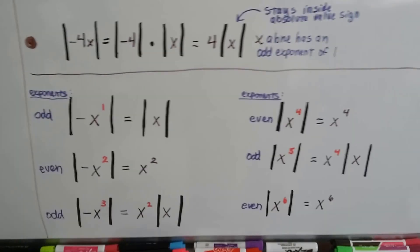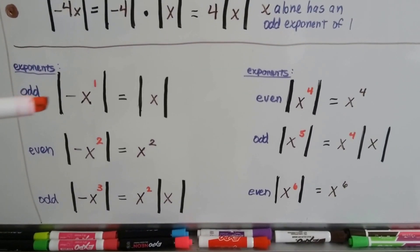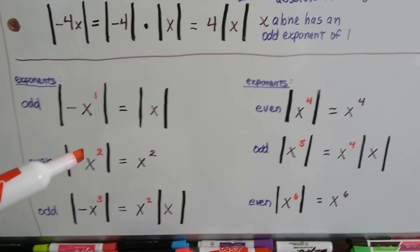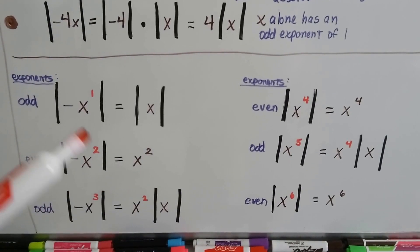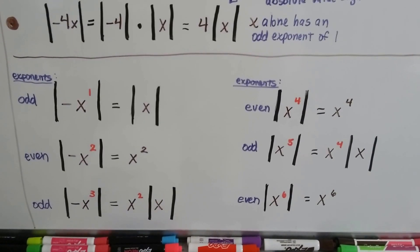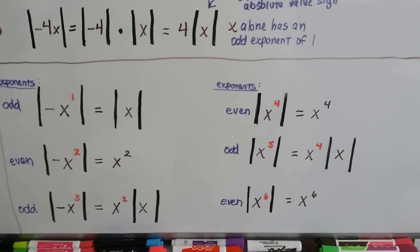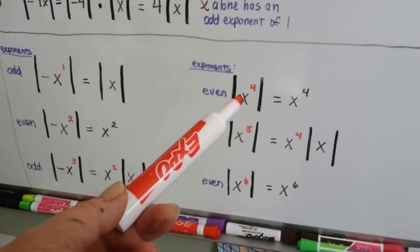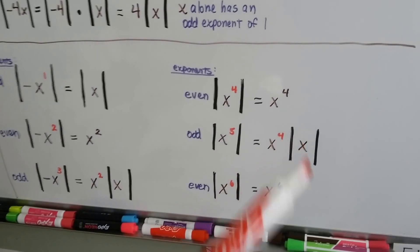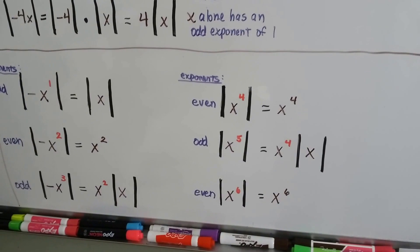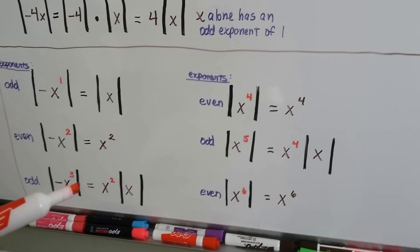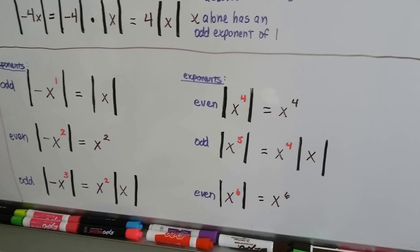Here's a chart that might help make sense of all of this. If the exponent is odd — like x to the first power — it becomes the absolute value of x. If it's even, it's just x squared with no absolute value bars needed. For an odd exponent like x to the third power, we pull out x squared but leave one x inside the absolute value bars. X to the fourth power is even, so it comes out entirely. X to the fifth power: we pull out x to the fourth, but the fifth one stays inside. X to the sixth power is even, so it comes right out. The pattern: whenever the exponent is even, remove the absolute value bars; whenever it's odd, pull out the even part but leave one factor inside.